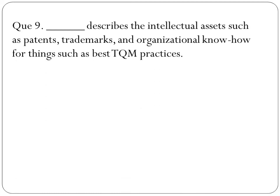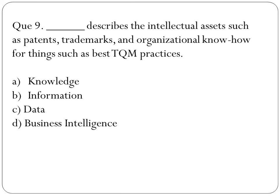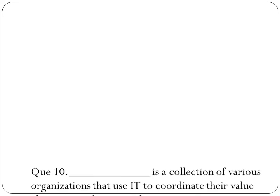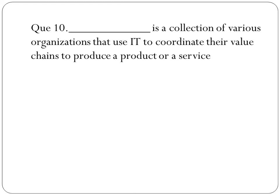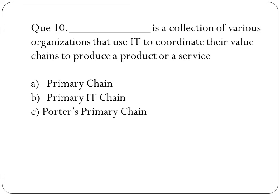Next question: dash describes the intellectual assets such as patents, trademarks, and organizational know-how for things such as best TQM practices. The options are knowledge, information, data, and business intelligence. The right answer is knowledge. The following question: dash is a collection of various organizations that use information technology to coordinate their value chains to produce a product or service, and the right answer is value web.